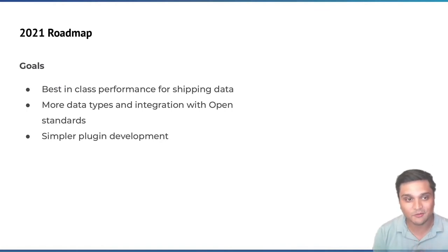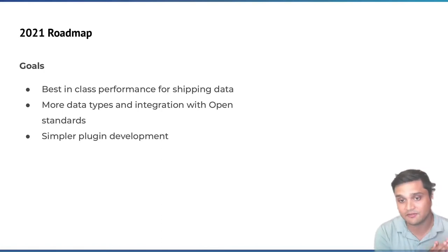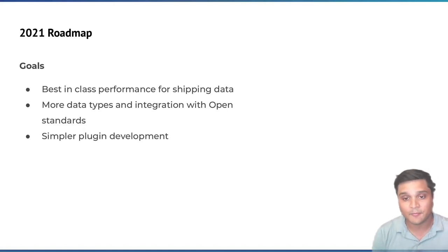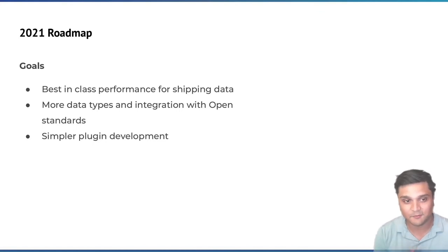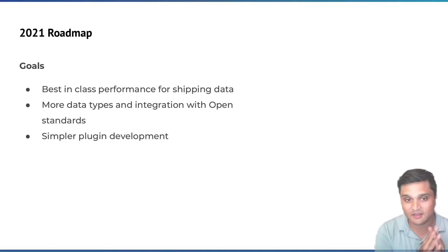Let's talk about the 2021 roadmap — what's up for FluentBit and FluentD. From goals, we have the overall goal of best-in-class performance for shipping data. We want to give you a lightweight package, as fast as possible, using as few resources as possible — whether that's CPU or RAM — making sure we can send the 50,000 messages per second you need. We also have more data types and integrations with open standards. Data is changing — it's no longer just a simple message or JSON payload. We have new things like metrics that we're excited to talk about today.